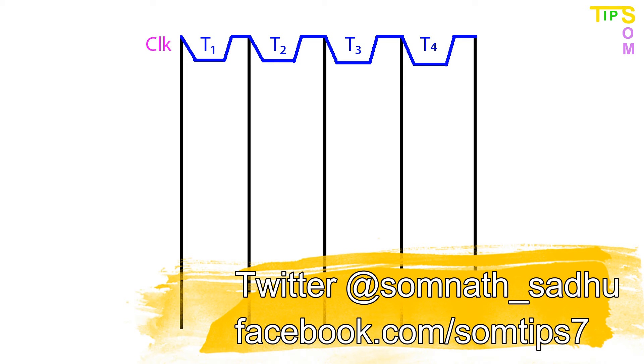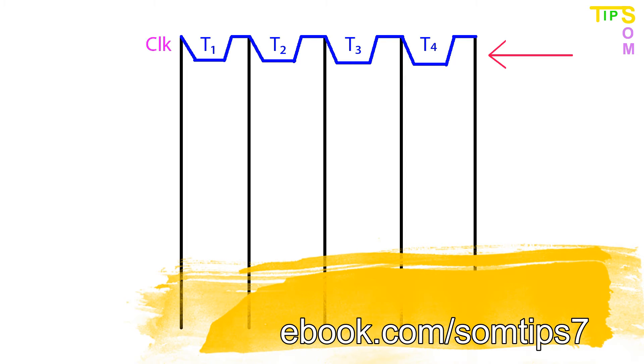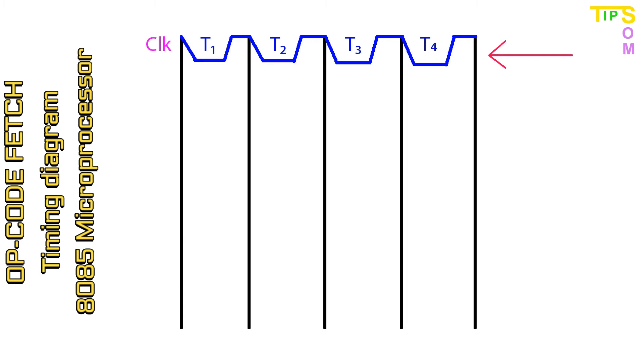Here is the timing diagram for the Opcode FETCH. Here at the top, the clock pulse is 4 times - T1, 2, 3, 4. It takes 4 clock cycles or 4 T-states to complete its operation. You can see this is the practical clock pulse, not the theoretical as I mentioned earlier.